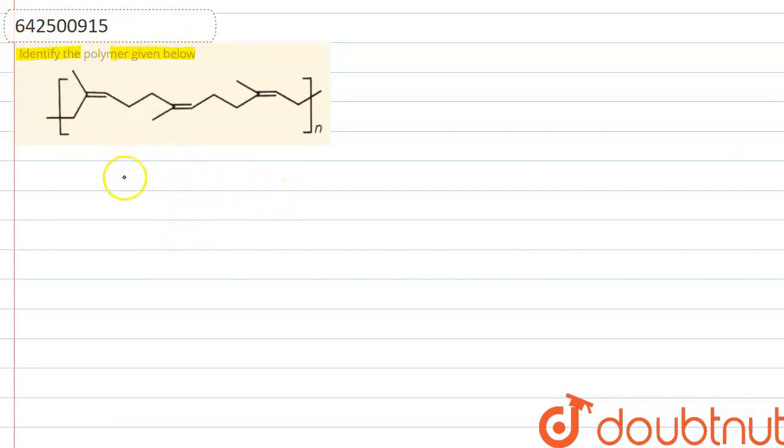Okay, so first of all, if we see this polymer, it is actually a natural rubber. Natural rubber which is also known as polyisoprene.